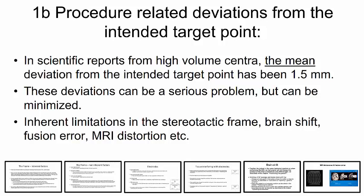A more common and important problem is procedure-related deviations from the intended target point. In scientific reports from high-volume centers, the mean deviation from the intended target point has been about 1.5 mm. And thus, many electrodes will be even further away from the intended target. These deviations can be a serious problem, but it can be minimized. It is due to inherent limitation in the stereotactic frame, brain shift, fusion error, MRI distortion and many other factors.